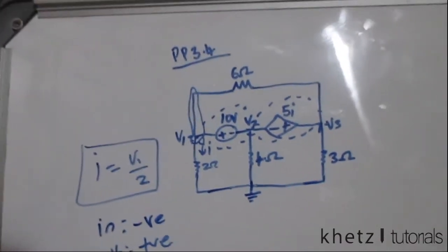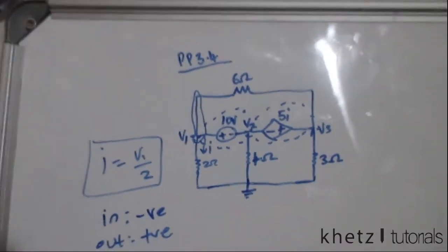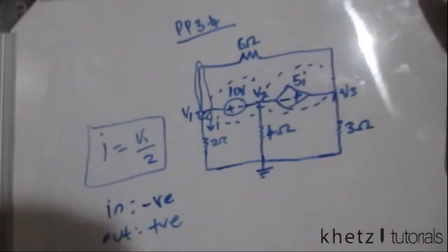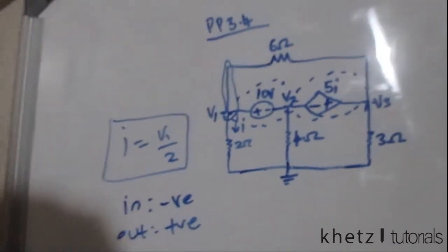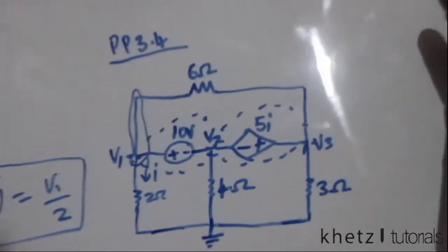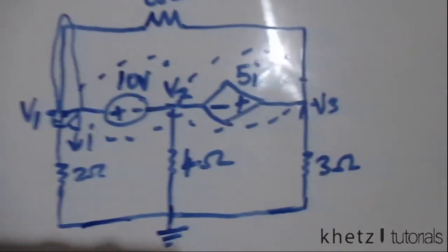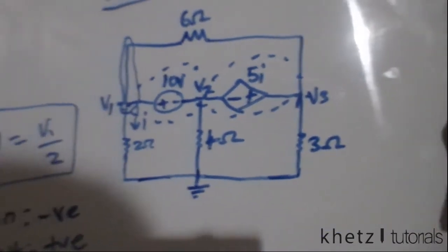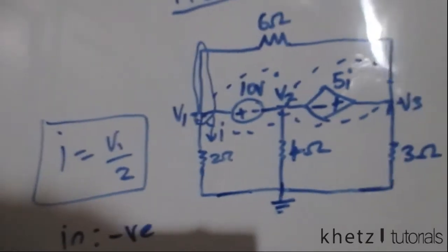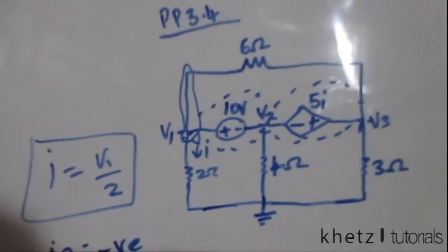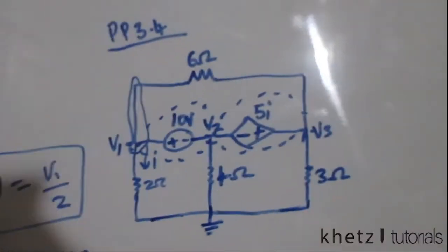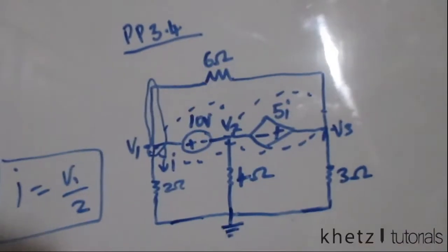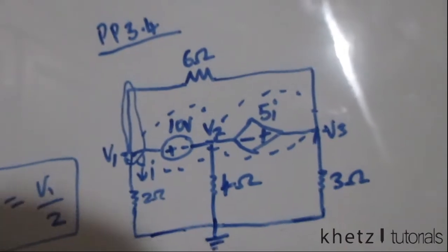Welcome to Cat's Tutorials. In this video I'll be doing practice problem 3.4. The question says we should find V1, V2, and V3 using nodal analysis.